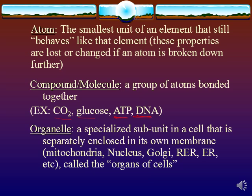Compounds and molecules are part of how organelles function. We talked about organelles in the last unit — these are specialized subunits in a cell that help the cells stay alive. Things like the mitochondria, the nucleus, the Golgi apparatus, the rough endoplasmic reticulum, and the smooth endoplasmic reticulum are often referred to as the organs of the cells. Note that for each of these, all of these are actually not considered alive — they're all technically abiotic. But as we get further up the levels, we'll switch to talking about more biotic things.